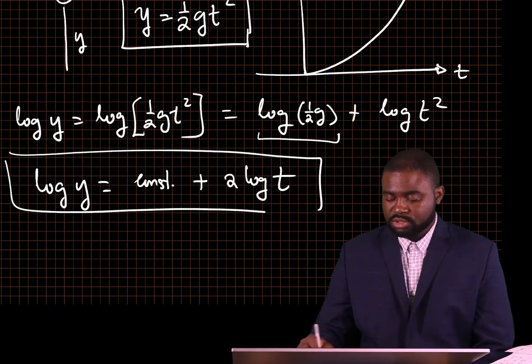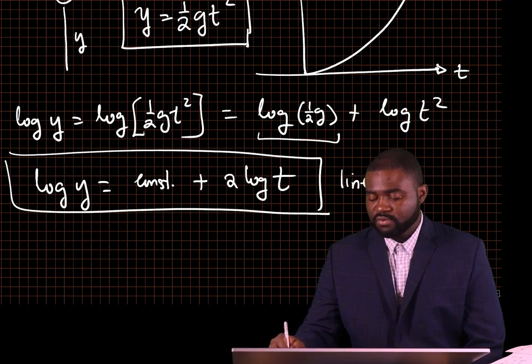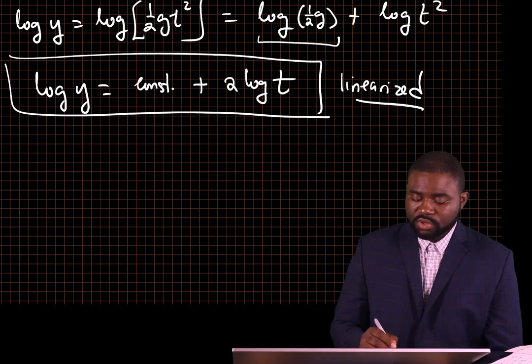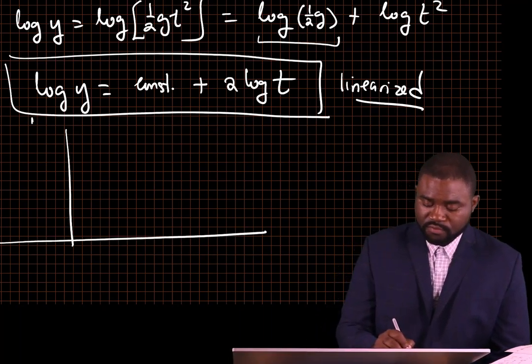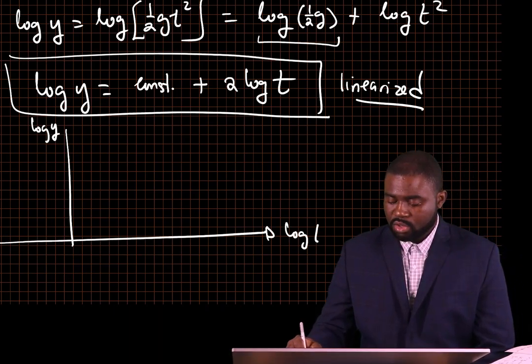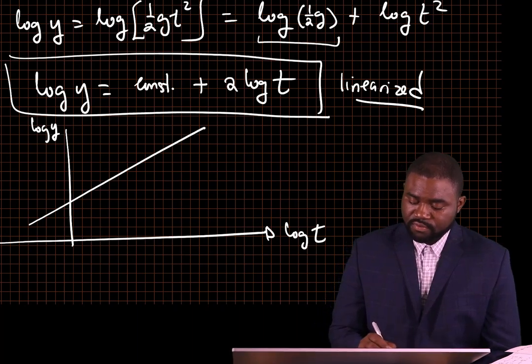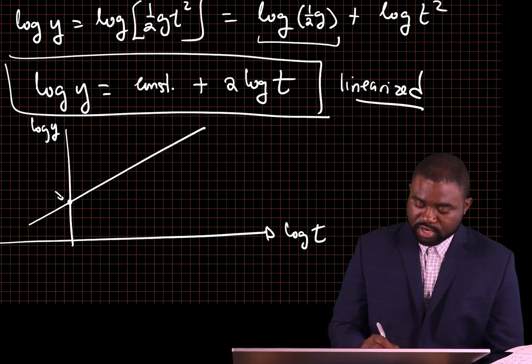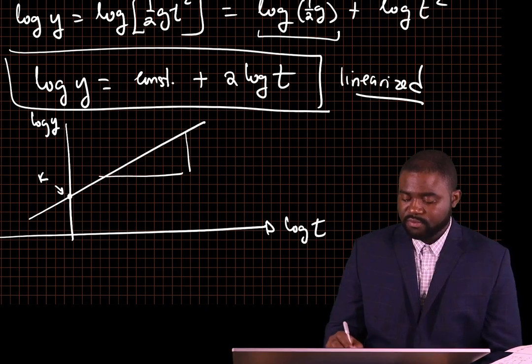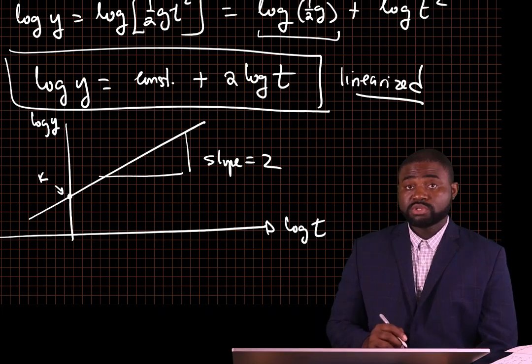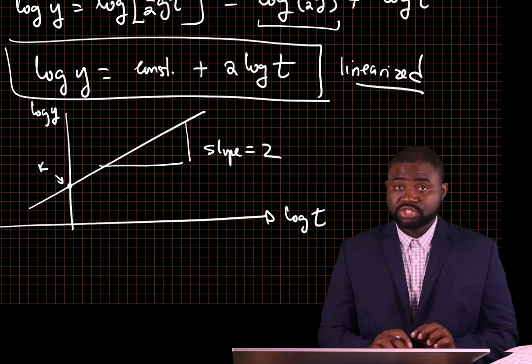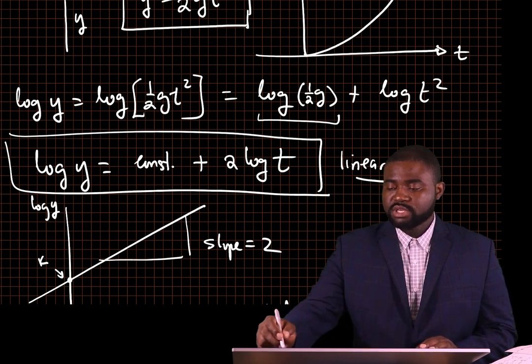In other words, you have linearized this equation. So, if you now draw a graph of log y against log t, it's going to be a straight line graph with an intercept which is equal to our constant. Now, the slope of this graph will equal 2. You see that it is way easier for you to analyze a straight line graph than to analyze a curve.